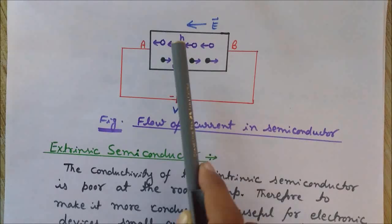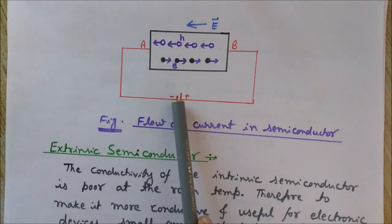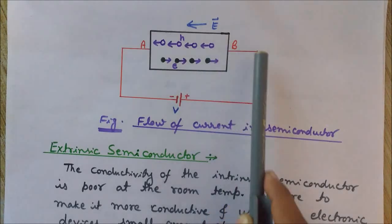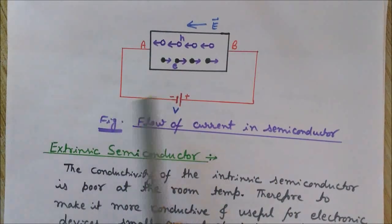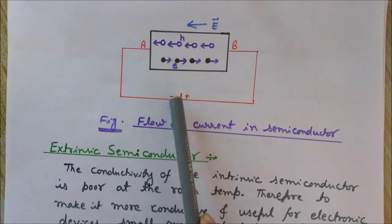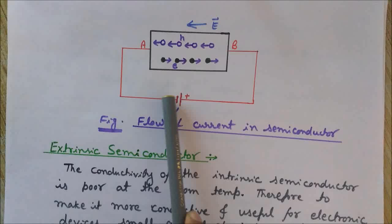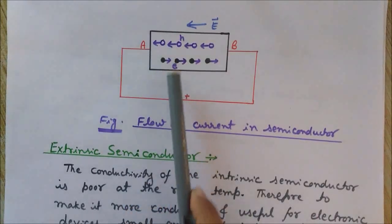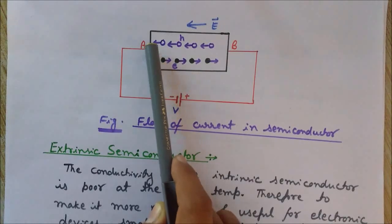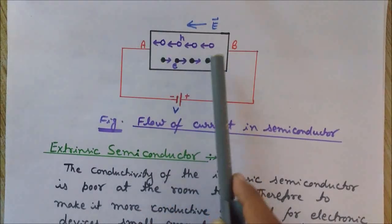The holes, being positively charged, are attracted towards the negative terminal of the battery, and electrons, being negatively charged, feel attraction towards the positive terminal of the battery. The negative terminal of the battery is the source of electrons, so electrons move from the negative terminal. Since holes are attracted towards the negative terminal, recombination of electrons and holes takes place at that point.